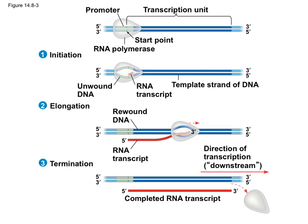Then we have elongation. The RNA polymerase zips along the DNA and builds RNA as it goes. It's only adding onto the 3' end, so the part hanging out is the 5' end and the part being built is the 3' end. Wherever the RNA polymerase is sitting must be the 3' end. You'll also notice the RNA is anti-parallel and complementary to the DNA — the 5' here matches the 3' there — because we're using the bottom strand as the template in this case.